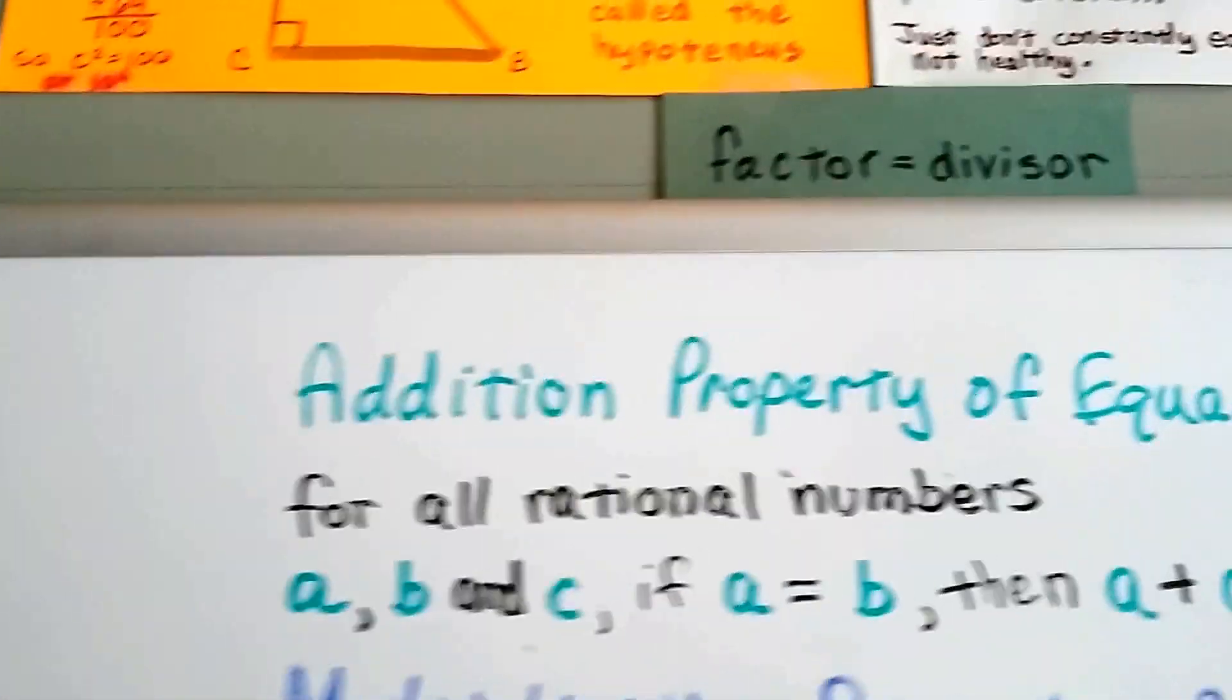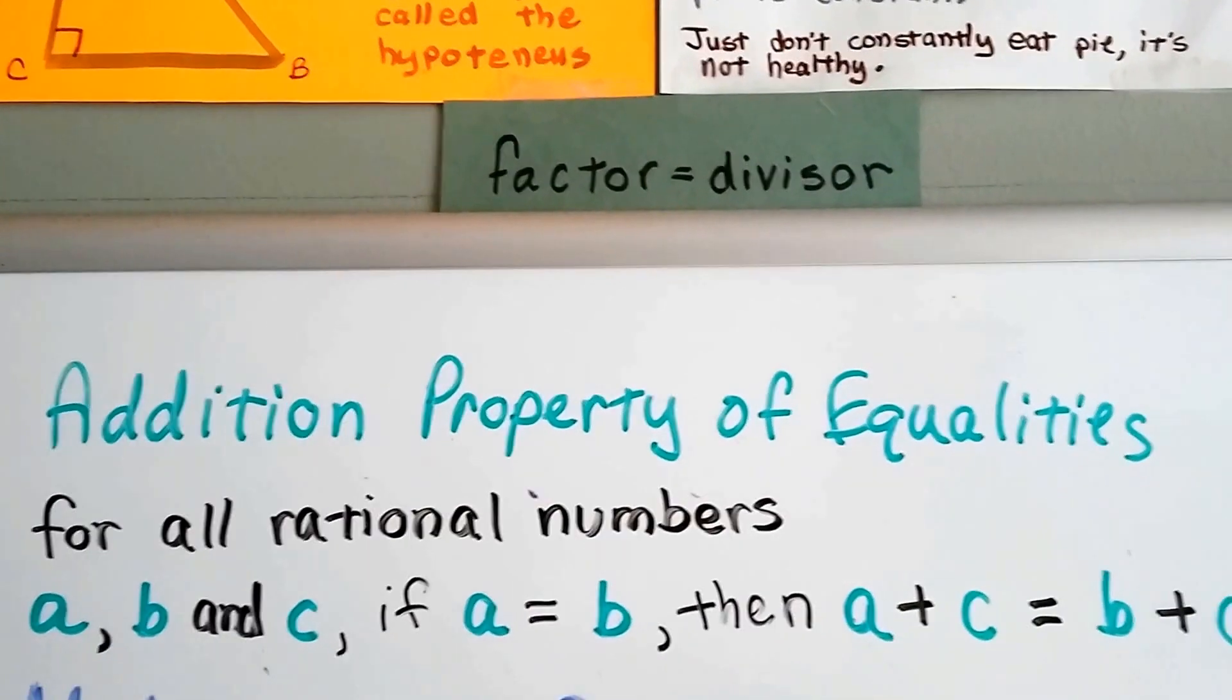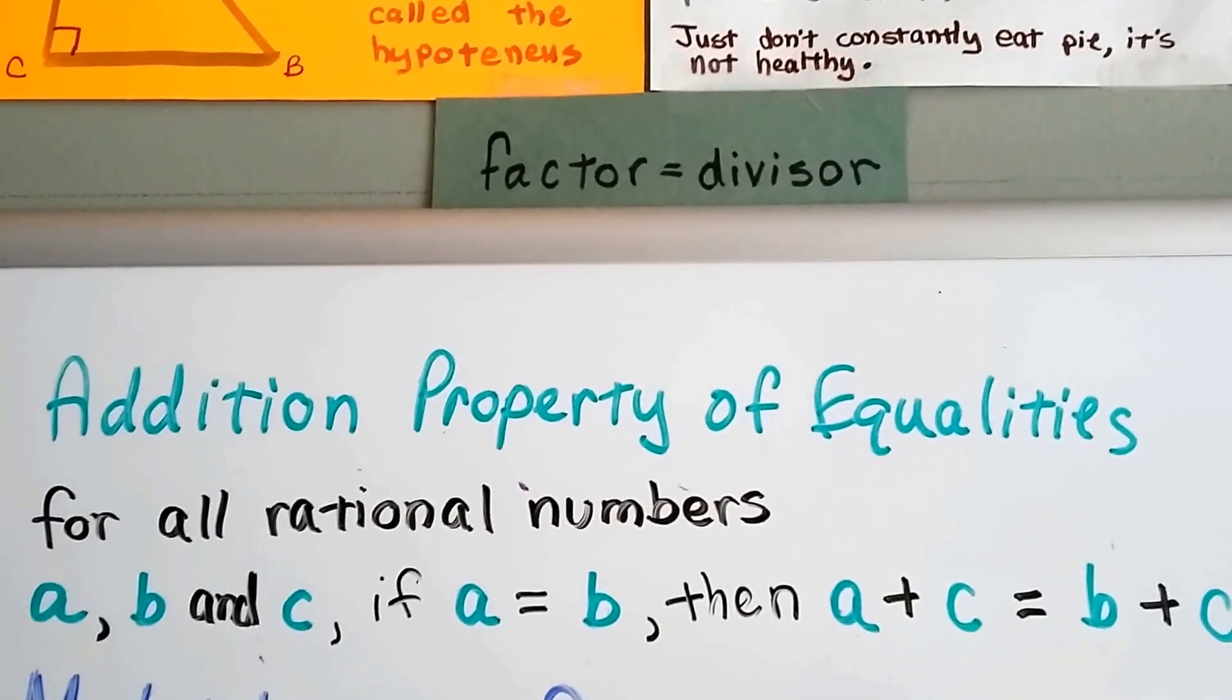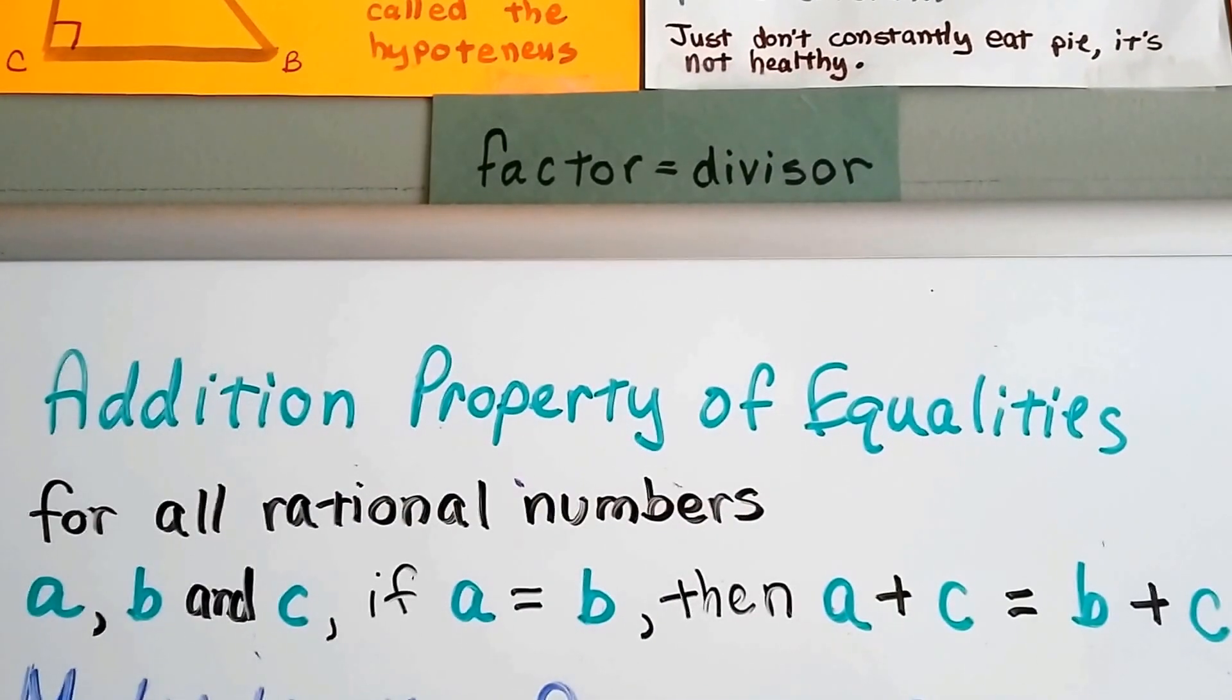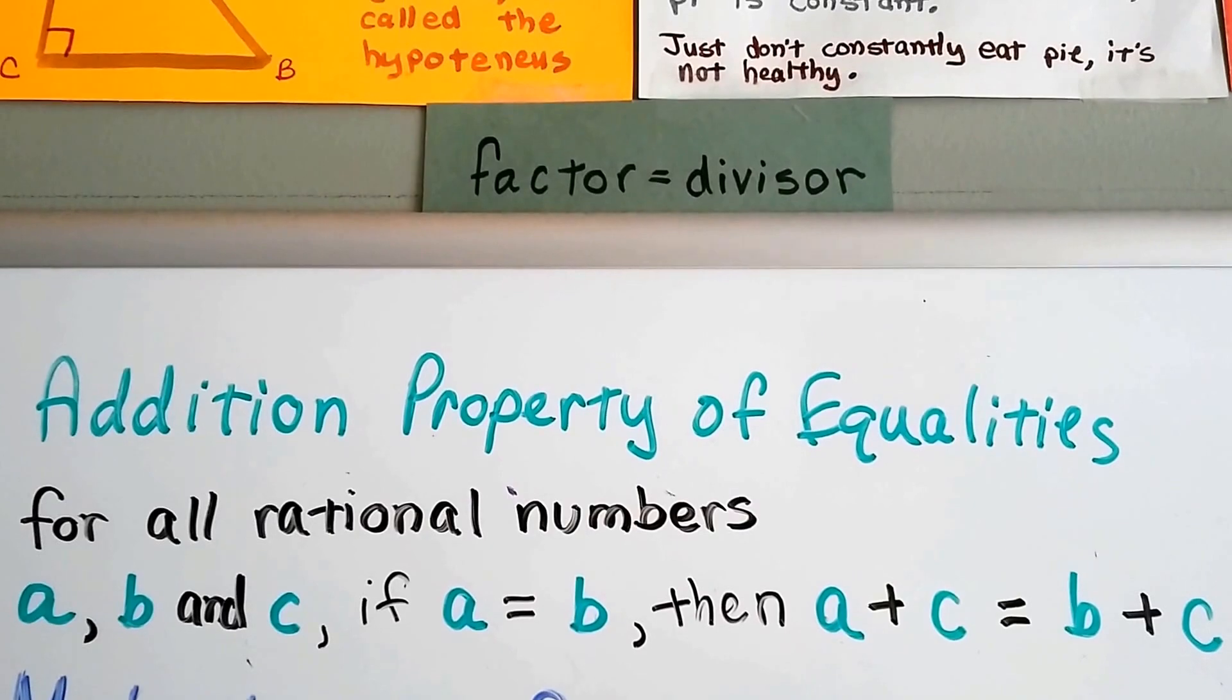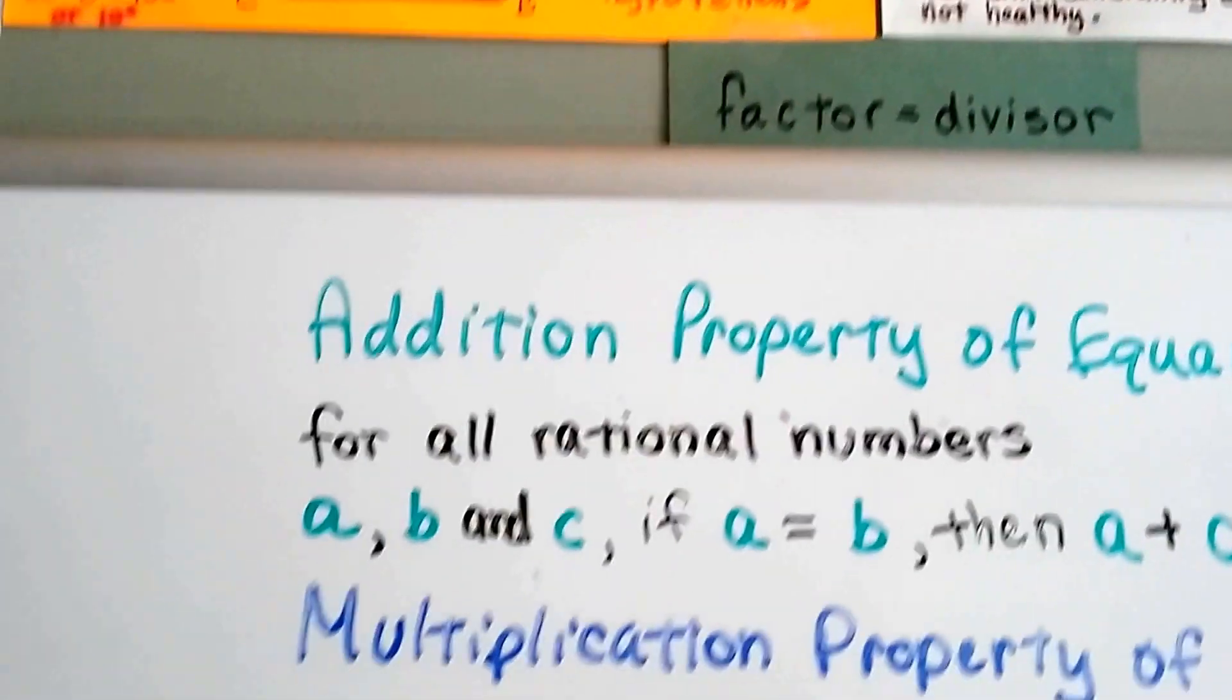So the formal definition of the addition property of equality is for all rational numbers a, b, and c. If a and b are equal to each other, then we can add a and c together and it'll equal what b and c are together.